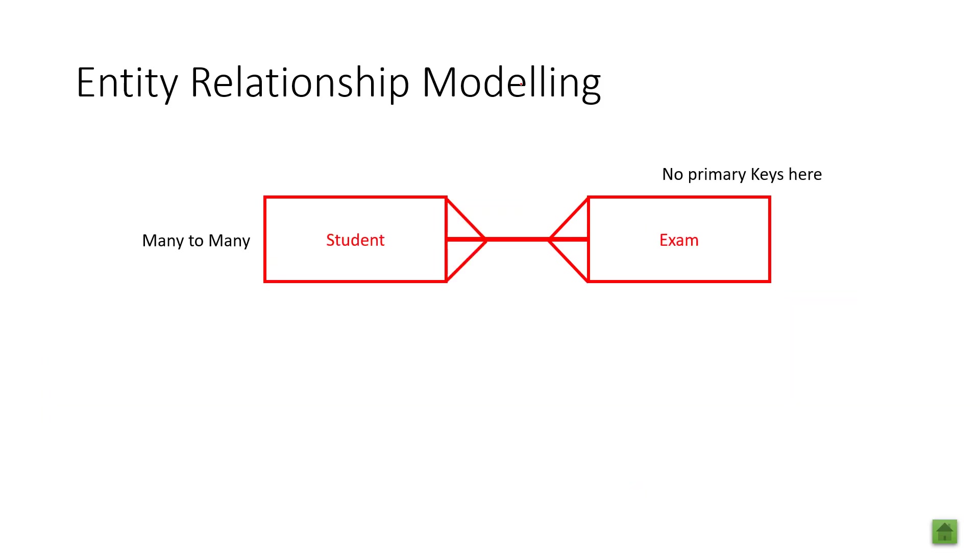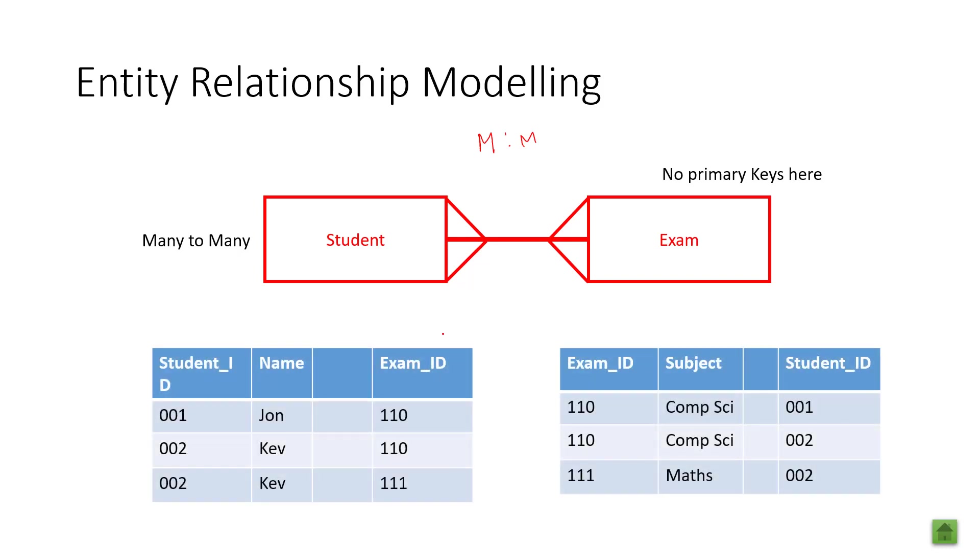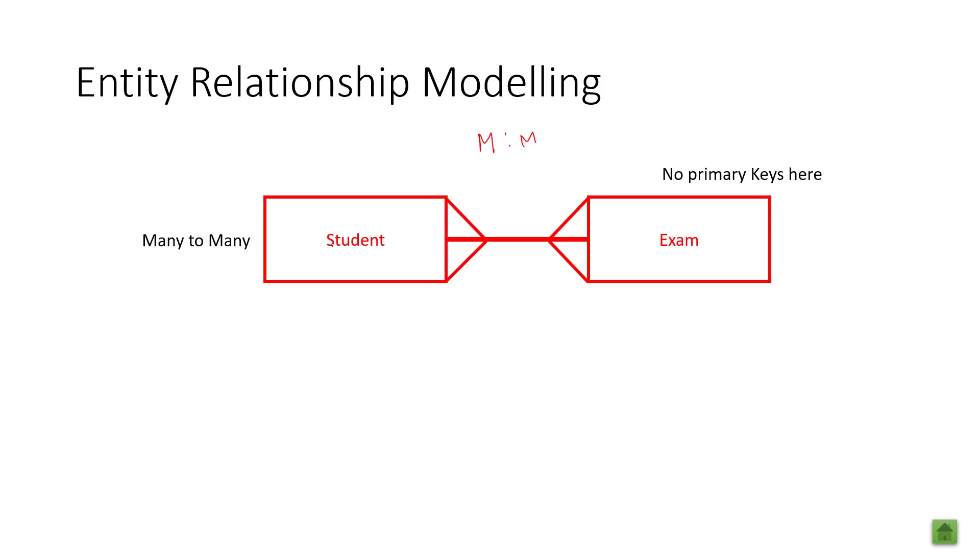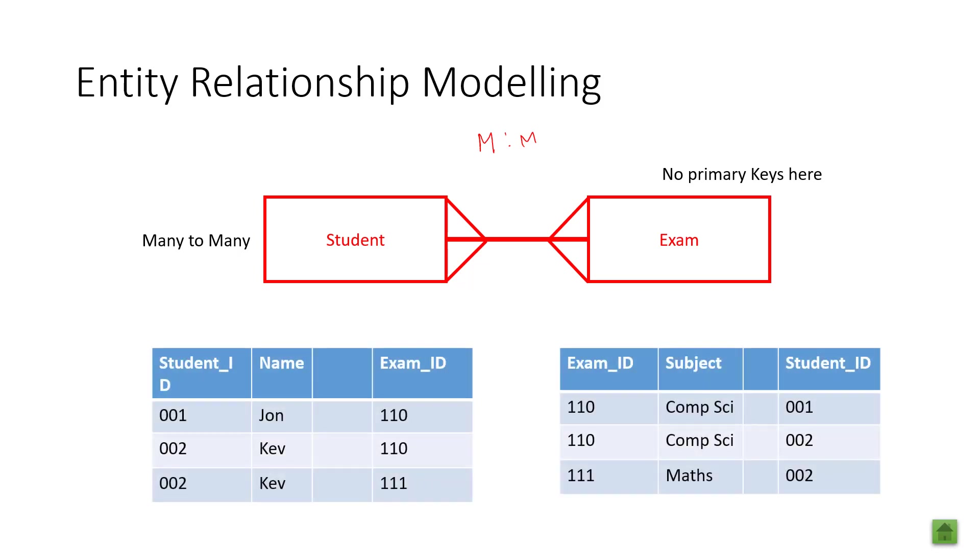In the next one, we have what we call a many to many relationship. You can see that because we've got many here and many here. This might be denoted as an M to M. Now, many to many relationships can cause issues. This is saying that many students can sit many exams and many exams are sat by many students. So, let's break this down.